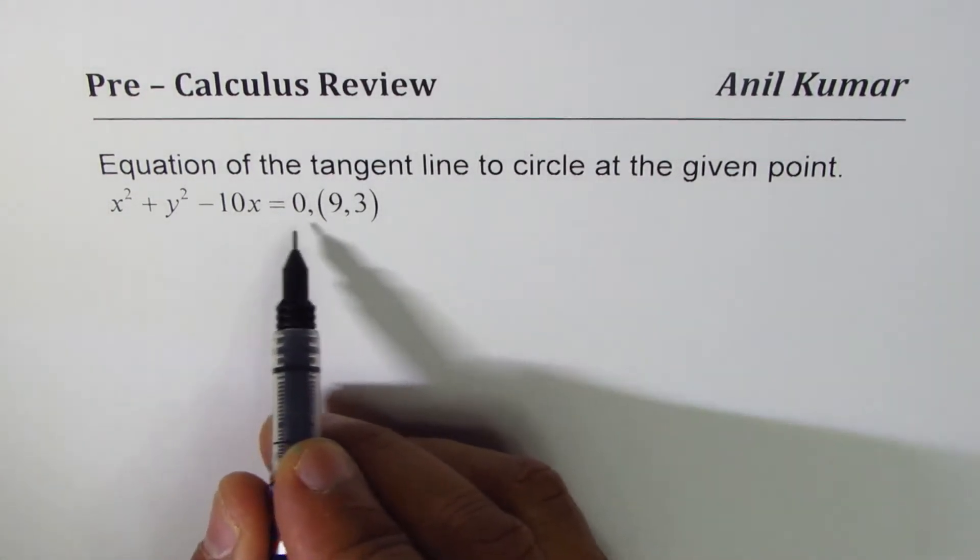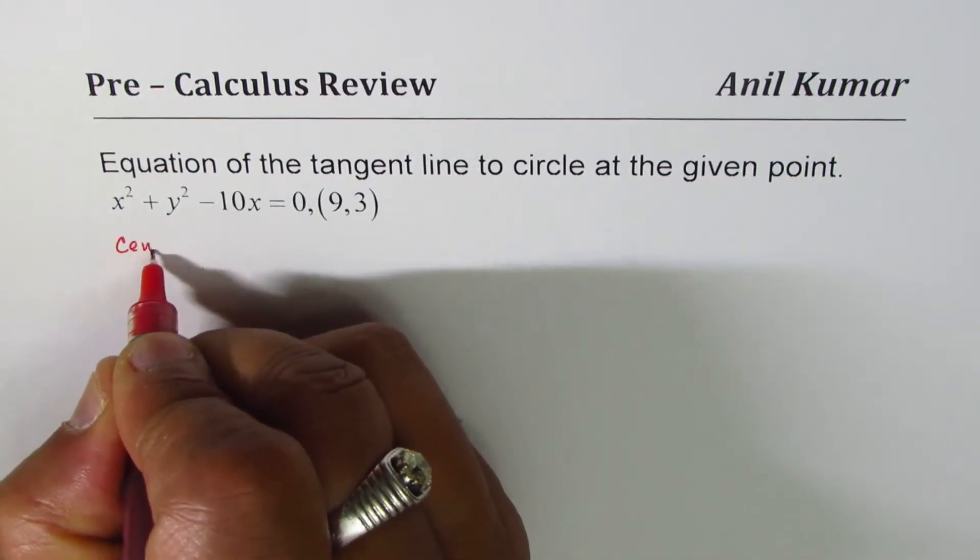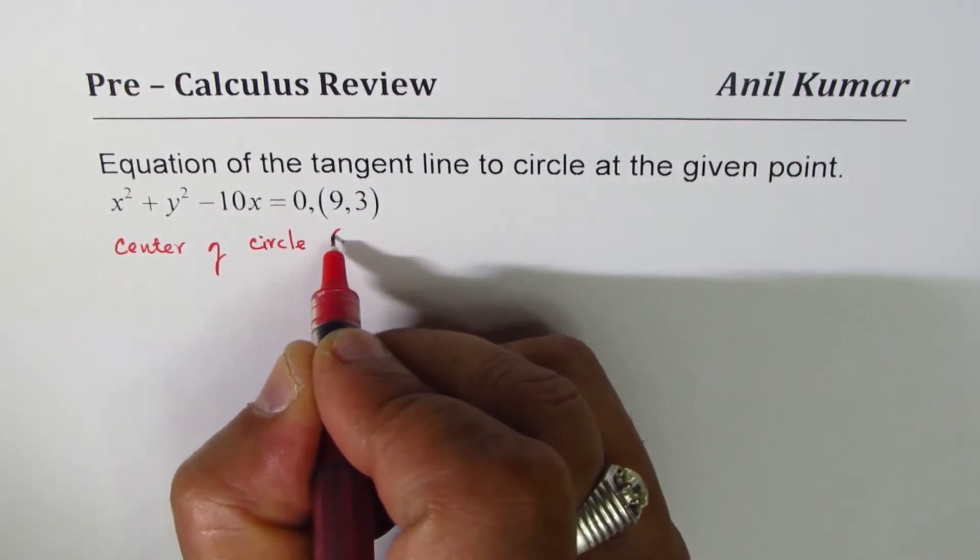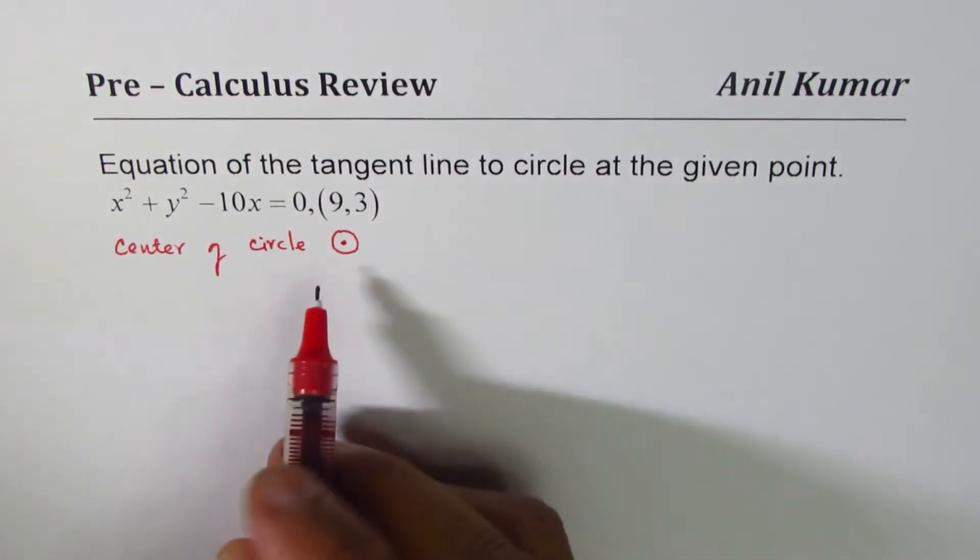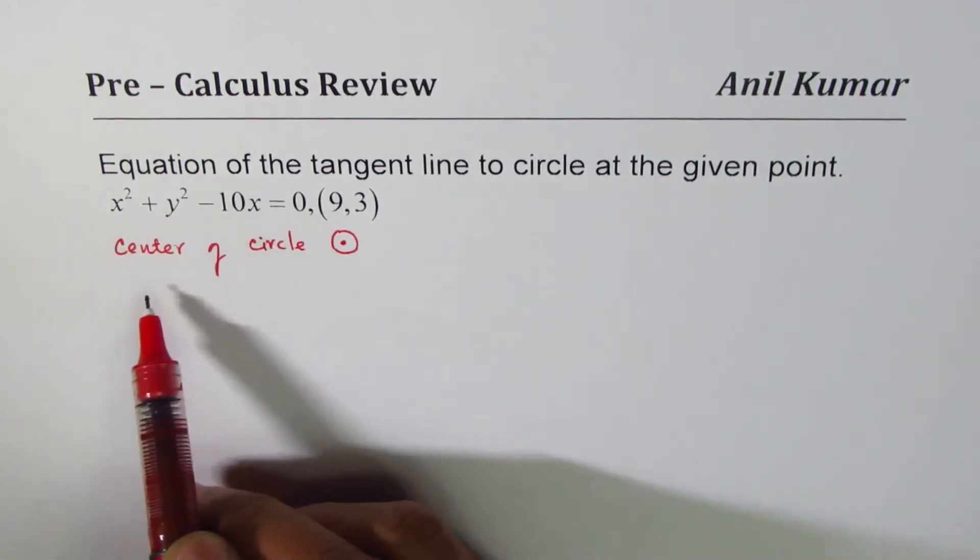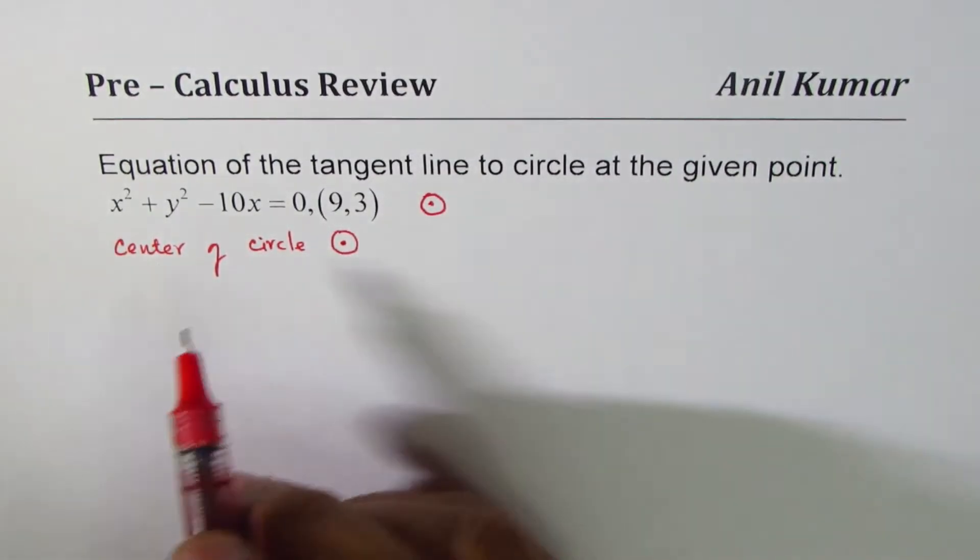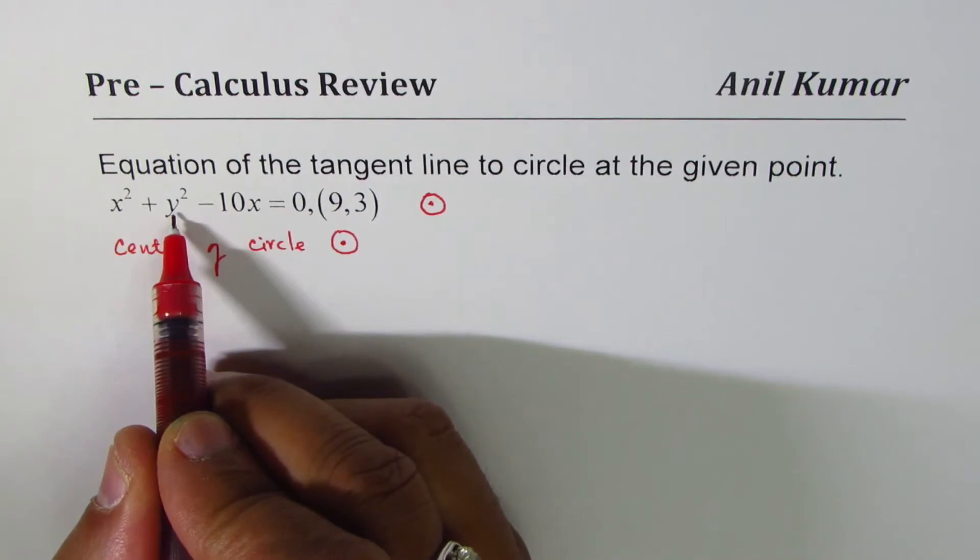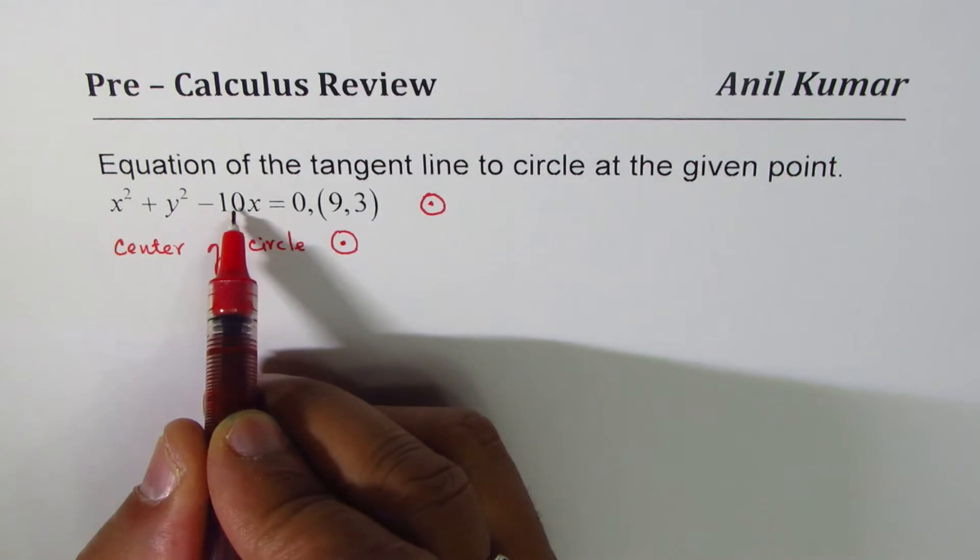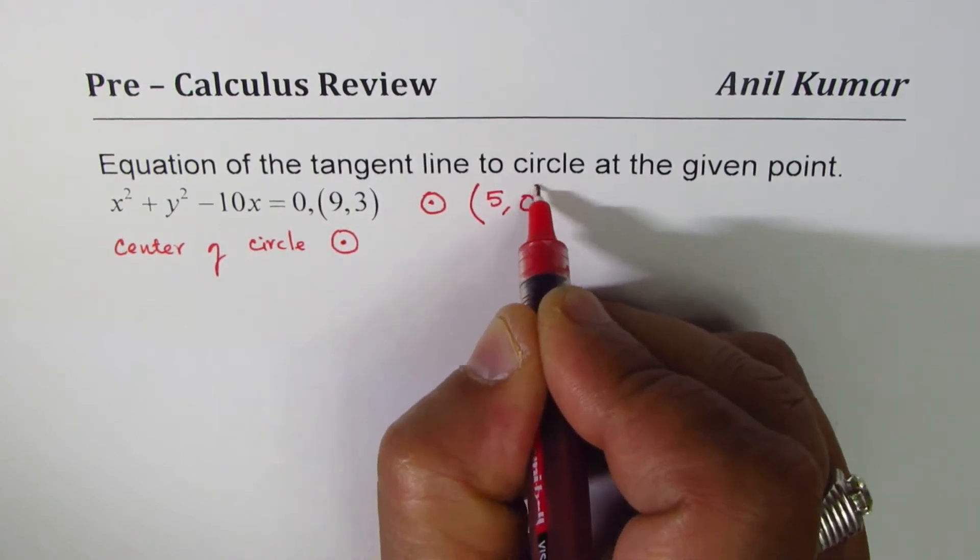So the idea here is, first thing is to find the center of the circle. Some of you can directly find it with your knowledge of this equation. The direct answer is, let me write down here, then we'll check with our process. The y value has not been translated, but the x has. And minus 10 becomes plus 10, and half is 5. So the point is 5, 0. That is the center.